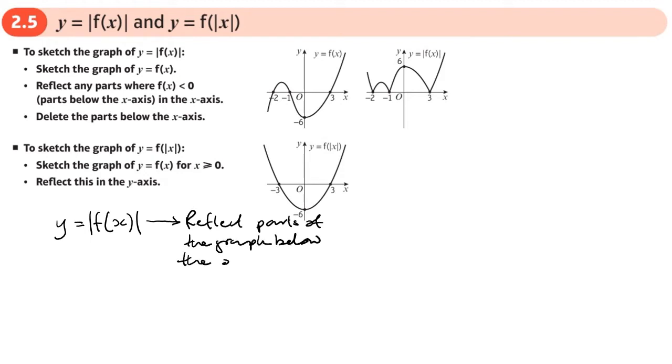You'll see an example of that here. So there's the original graph. These bits down the bottom get reflected up here, and that bit stays where it is. Then this bit down here gets reflected up there. So these were down here originally and got reflected up.